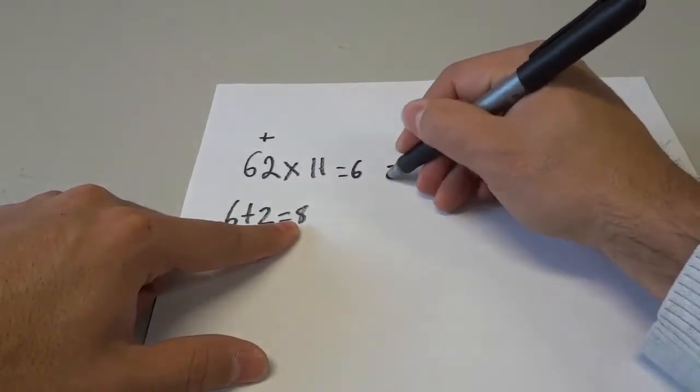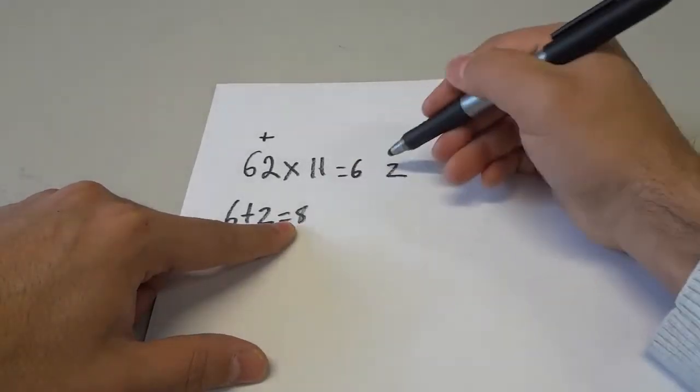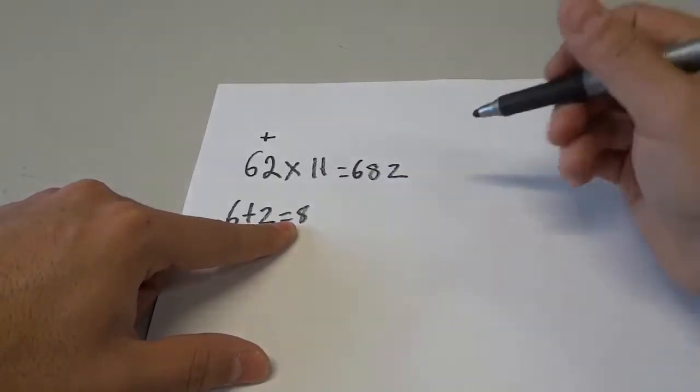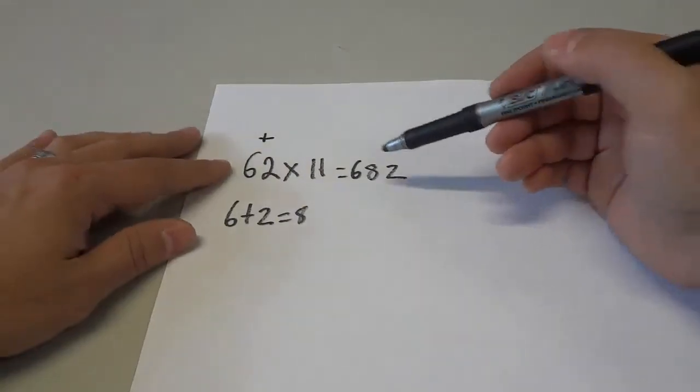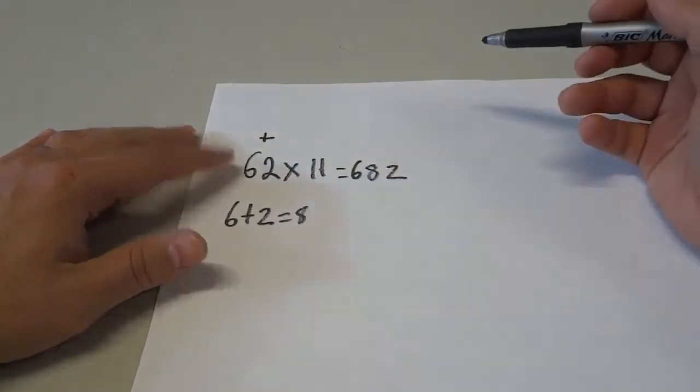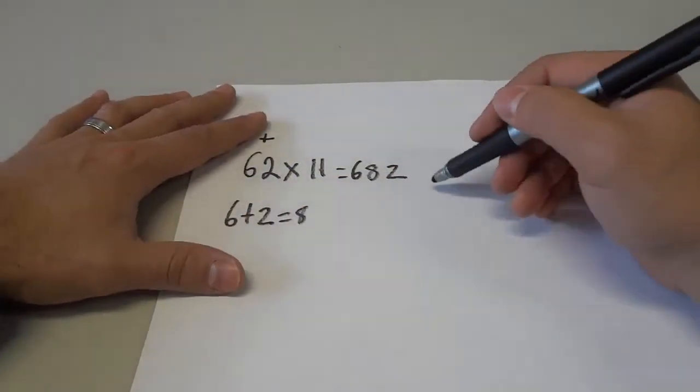So we have 6, 2, and all that we have to do is take this answer and put it in the middle. 682. That's the answer for 62 times 11. It is literally that easy.